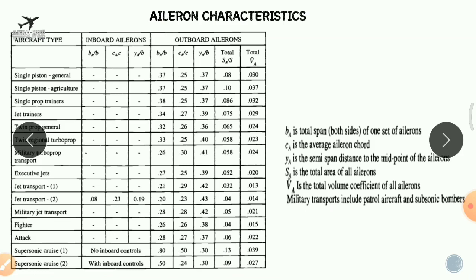SA divided by S is the total aileron area divided by the wing area. For example, a fighter aircraft has SA/S equal to 0.04. Different values apply for different aircraft types, and these are design standards that must be followed when sizing the aileron. VA, the aileron volume constant, also has specific standard values for each aircraft category.